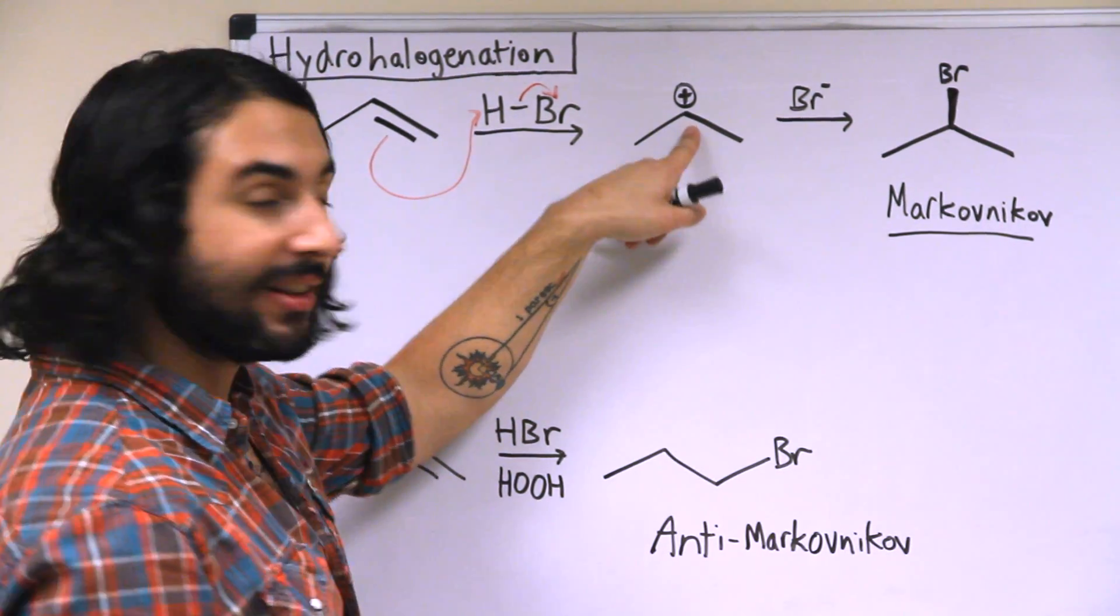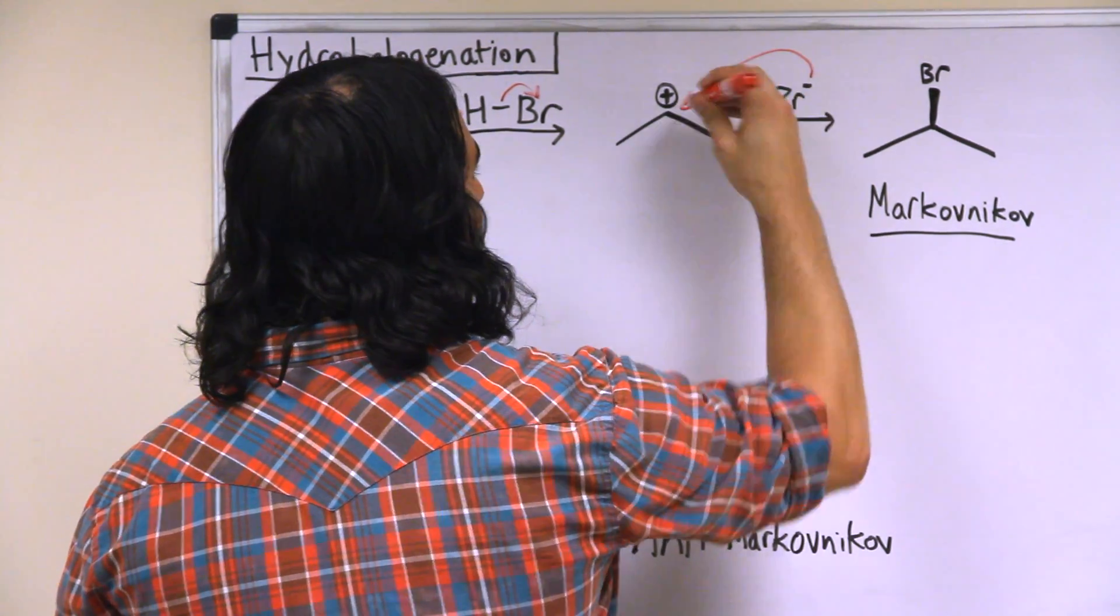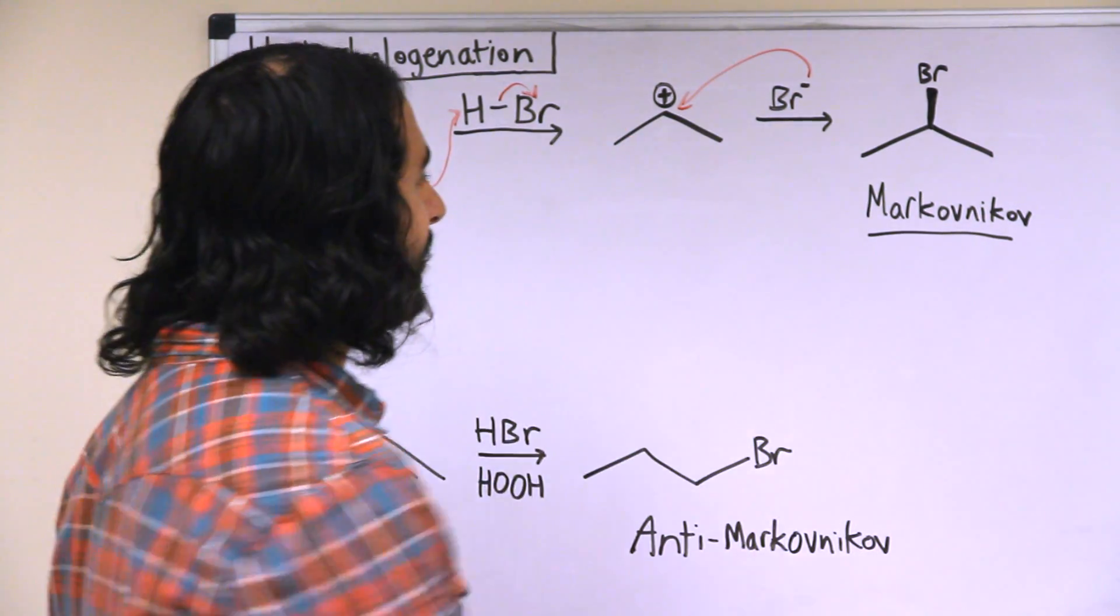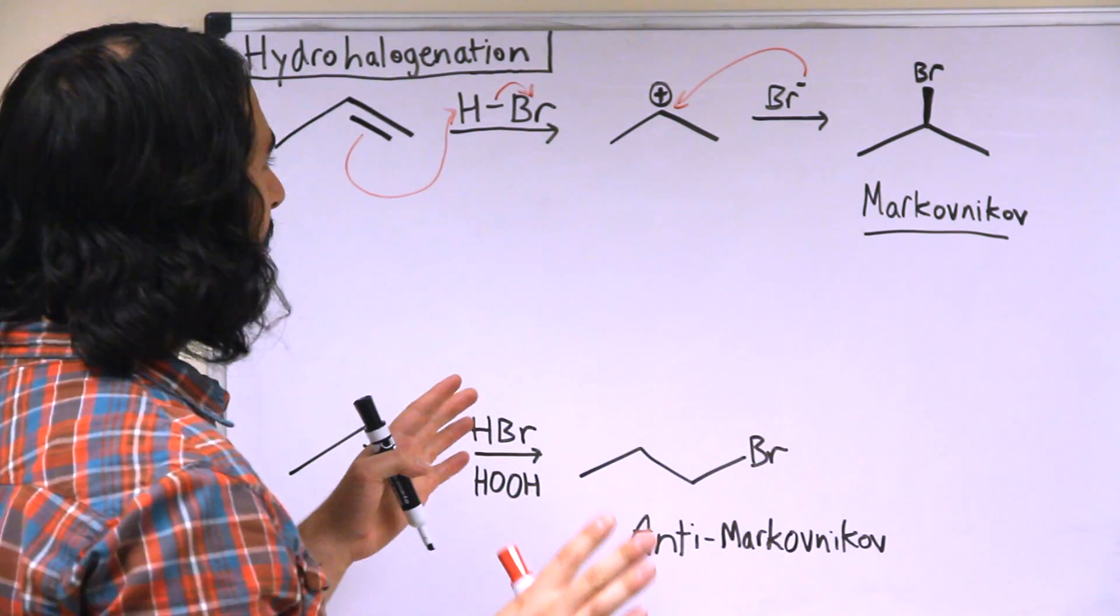We're going to get the carbocation there and then the bromide from before, very easy, negative charge is attracted to a positive charge and we're going to get our alkyl bromide.